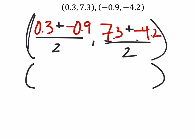This would simplify into 0.3 plus negative 0.9, so that's really just going to be a minus. That'll give us negative 0.6 over 2.